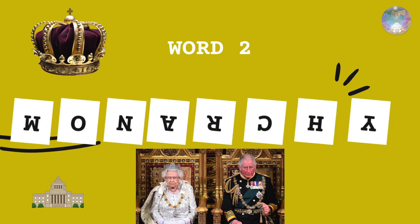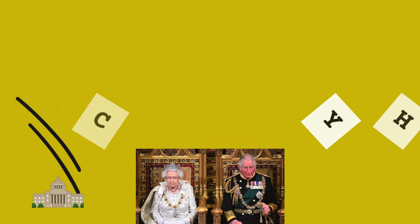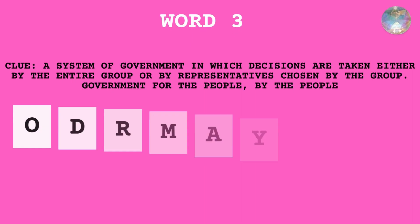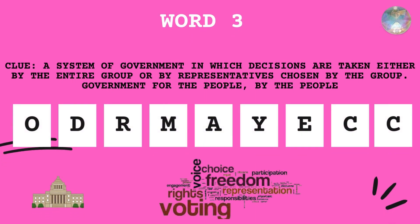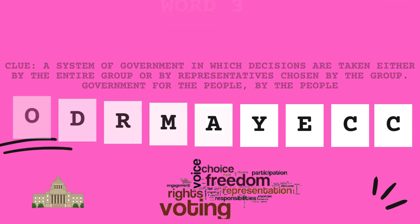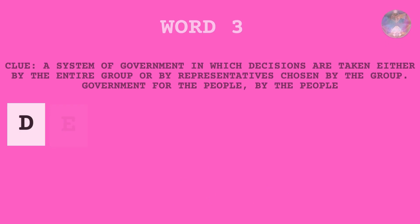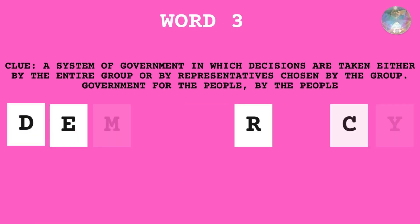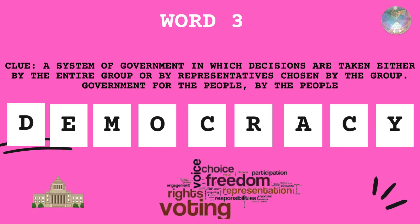Next word. This is a system of government in which decisions are either made by the entire group or by representatives who are chosen by the group. This is a government for the people, by the people. I know that clue gave it away — yes, that's a democracy.